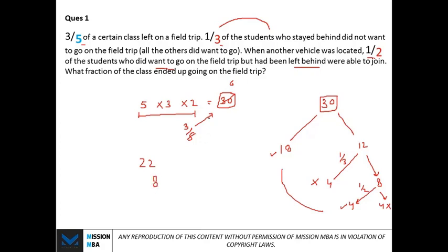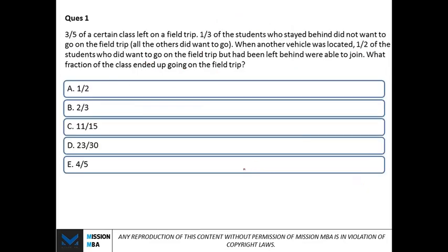Twenty-two out of thirty went on the field trip, which simplifies to eleven by fifteen. Looking at the answer choices, that's option C. I was explaining step by step, but you can actually do this in under thirty seconds once you know the trick.